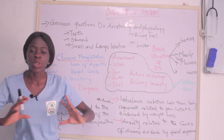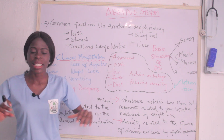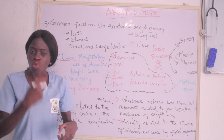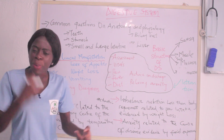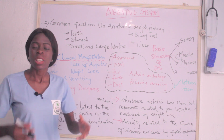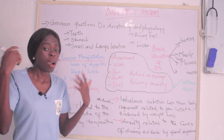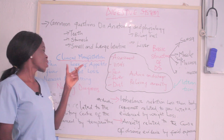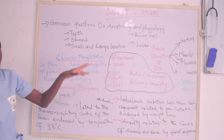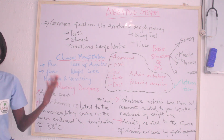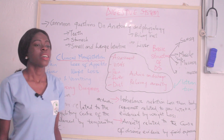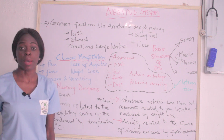The digestive system is majorly about the food we eat — how it is digested and absorbed into the bloodstream. When anything is wrong with the digestive system, the patient will not be able to eat properly, and there will definitely be loss of appetite and weight loss. Another common sign and symptom associated with the digestive system is nausea and vomiting.